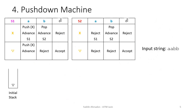Now let's demonstrate how we can use a pushdown machine to check whether a particular string is accepted or rejected. This is the same pushdown machine for grammar 2, and the input string we will check is AABB. We start with the initial stack and read the input string one by one. The current input is A. We start with state 1, read bottom marker and A, which says push X and advance. So we push X onto the stack and advance — our pointer now moves from the first A to the second A.